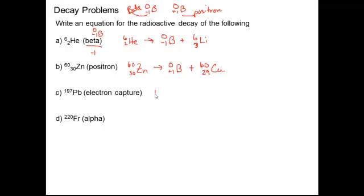Alright, lead-197 undergoing electron capture. So electron capture is in the reactants. Lead is number 82. So 82 minus 1 is 81, and 197 plus 0 is 197. So that produces thallium TL.